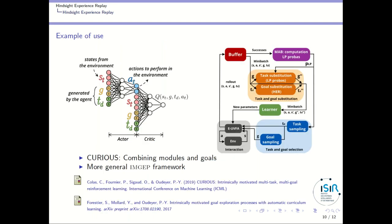If you want to know more about Hindsight Experience Replay, you might look at a few recent papers that use it. A first instance is the CURIOUS architecture from Cédric Colas and a few colleagues, where Cédric combined achieving many goals — the multi-goal case of HER — while also learning to achieve different modules with big functions applied to these goals. You can see in the architecture a goal substitution component responsible for replaying trajectories with different goals.